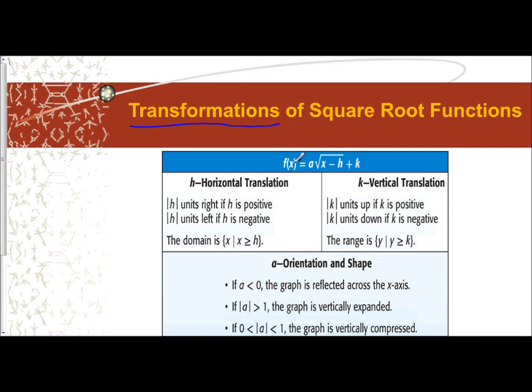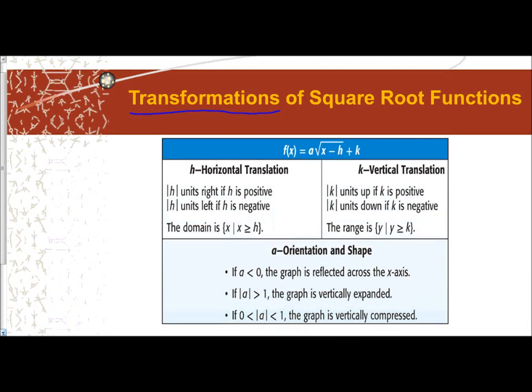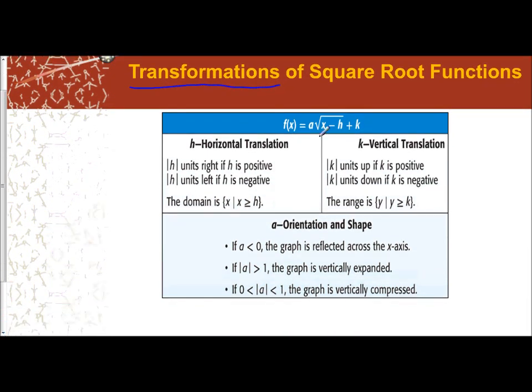The general setup for a transformation is: you have your function equals a times the square root of x minus h plus k. h represents the horizontal translation, k is the vertical. a deals with your orientation, which means is it reflected over the x-axis or not, and the shape - is it increasing faster or is it increasing slower?